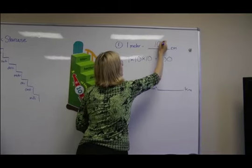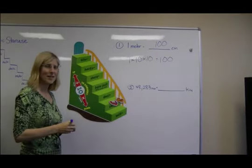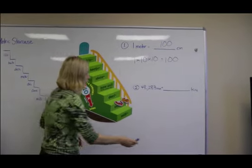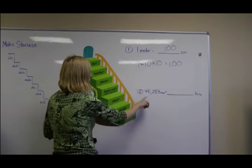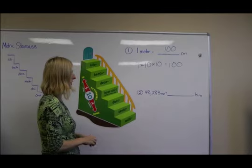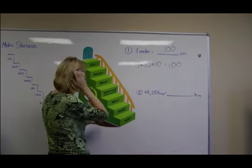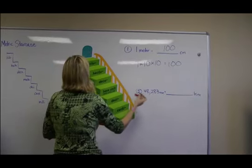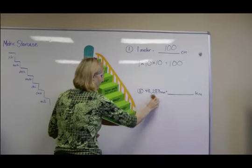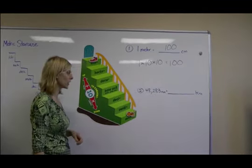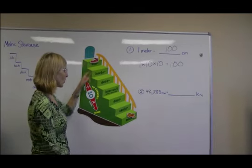You can also use the staircase to convert upward as well. So for example, let's jump to a more difficult problem such as 48,283 millimeters is how many kilometers. So I'm trying to get to kilometers. So I put my shoe on the kilometer step and I'm going to put the cat down here on the millimeter step. And the cat is going to have to move all the way up there.